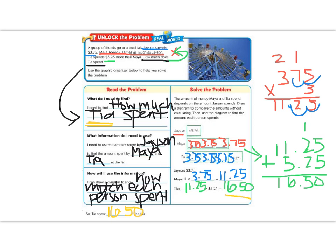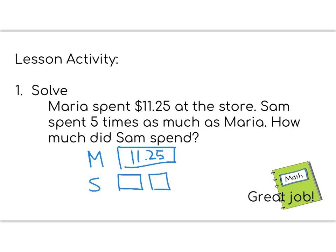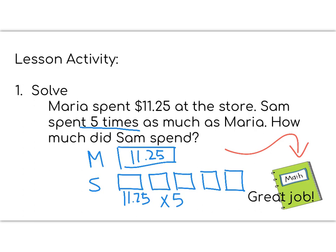Great job so far, 5th graders! Make sure that if I wrote it on my page, you wrote it on your page too. Now it's time for the lesson activity. The activity has a comparison problem like the one we just solved. It says Maria spent $11.25 at the store and Sam spent 5 times as much as Maria. We set this up with a box problem — Maria has one box worth $11.25, and Sam spent 5 times as much, so we draw 5 boxes each worth $11.25. Solve $11.25 times 5 in your math notebook and be ready to show your teacher tomorrow. Great job 5th graders!